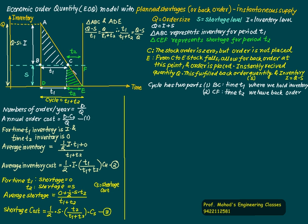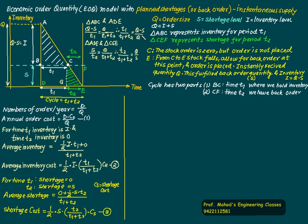Similarly, triangles CGE and ADE are also similar triangles. Here CG equals S and corresponds to T2, while Q corresponds to T1 plus T2. So T2 divided by (T1 plus T2) equals S divided by Q. We now have T1/(T1+T2) = (Q−S)/Q and T2/(T1+T2) = S/Q. We can now express the total cost in terms of Q and S.